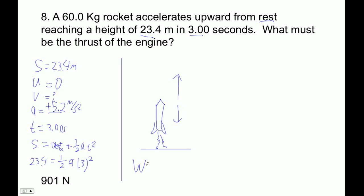The weight is going to be M times G. So that's 60 times 9.81, so that's 588.6. The weight is 588.6 Newtons. And that's down, so I'll make it negative.